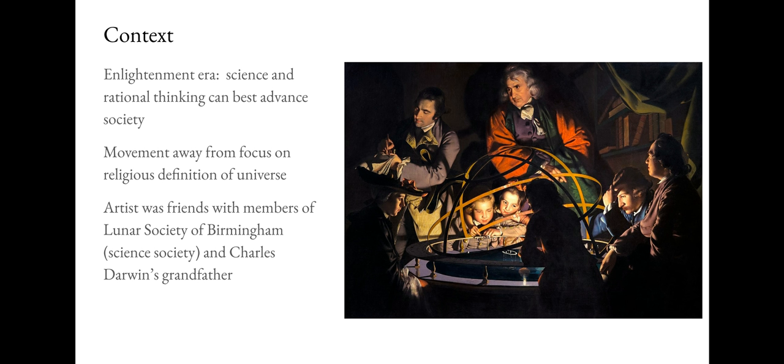Our artist Joseph Wright of Derby was deeply involved in the world of science. He was friends with members of the Lunar Society of Birmingham, and some say the man in red — the philosopher — is a portrait of one of his friends from that society. He was also friends with Charles Darwin's grandfather, who was involved in science. This is not just an artist for hire; he was a full believer in the pursuit of scientific understanding.